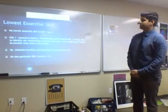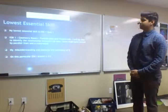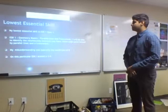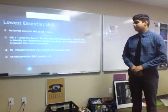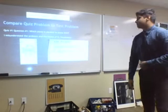My lowest essential skill was Essential Skill 1, Quiz 1 — Geometry Basics: Parallel Lines and Transversals. I will be able to identify the relationship between two lines and name angle pairs formed by parallel lines and a transversal. My misunderstanding on this was the vocabulary, like the skew lines and so on. I got a one out of four.